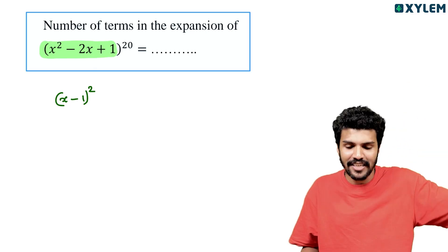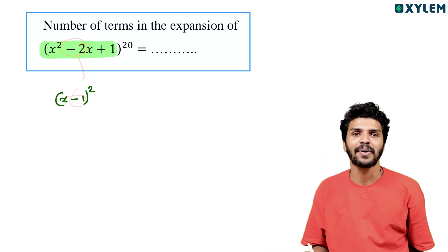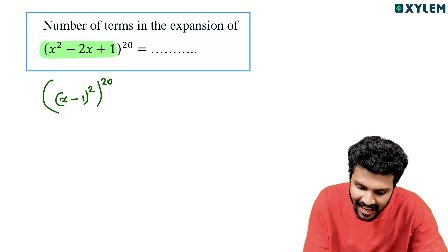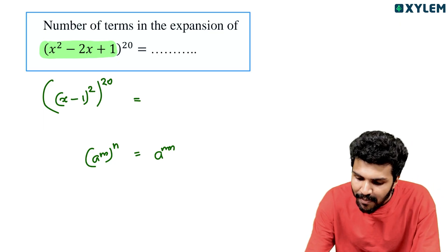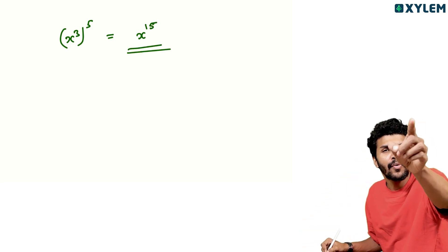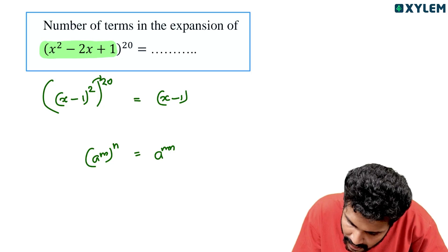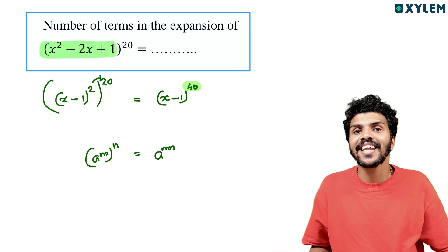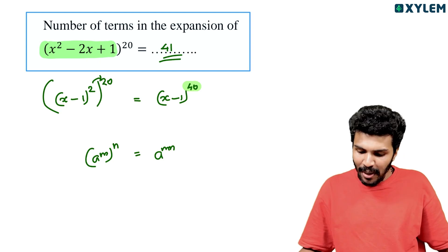This is the completing square method. x squared minus 2x plus 1 — this is (x minus 1) whole squared. So this is (x minus 1) whole square, whole raised to 20. So x cube whole raised to 5 — this is x raised to 15. This is (x minus 1) whole raised to 20, giving (x minus 1) whole raised to 40. So the index is 40, and the number of terms is 41.